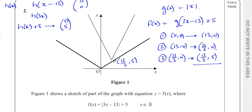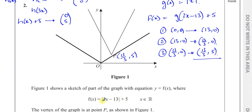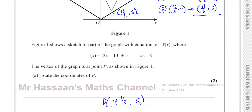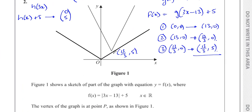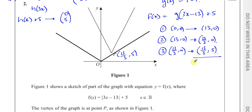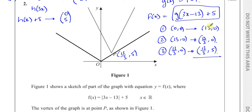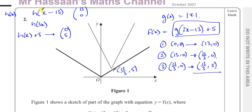In an exam you can pretty much just see this. That's why it says 'state' — it doesn't say 'calculate', so you don't have to actually show these steps. Once you realize that this transformation has taken place, which is quite easy to spot, you think about the origin moving 13 spaces to the right, then divide by 3 to get 13 over 3, then vertically 5 spaces up. So you can quite quickly get that answer.